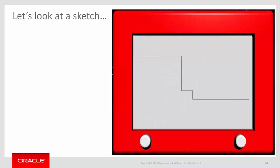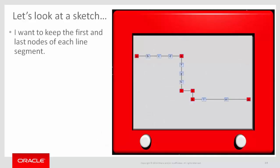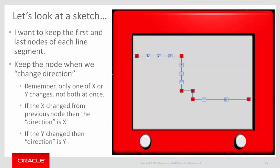Let's look at another sketch. I want to keep the first and last nodes of each line segment. The way I'm going to conceptualize this: I want to keep a node when we change direction. In this challenge, only one of x or y can change, not both at once. So if x changed from the previous node, the direction is x; if y changed, the direction is y. For example, node E — x changed from the previous node, so direction is x. Node F — y changed, so direction is y. Right around node E, we change direction. The end node has no direction after it, and the start node's direction before it is null.